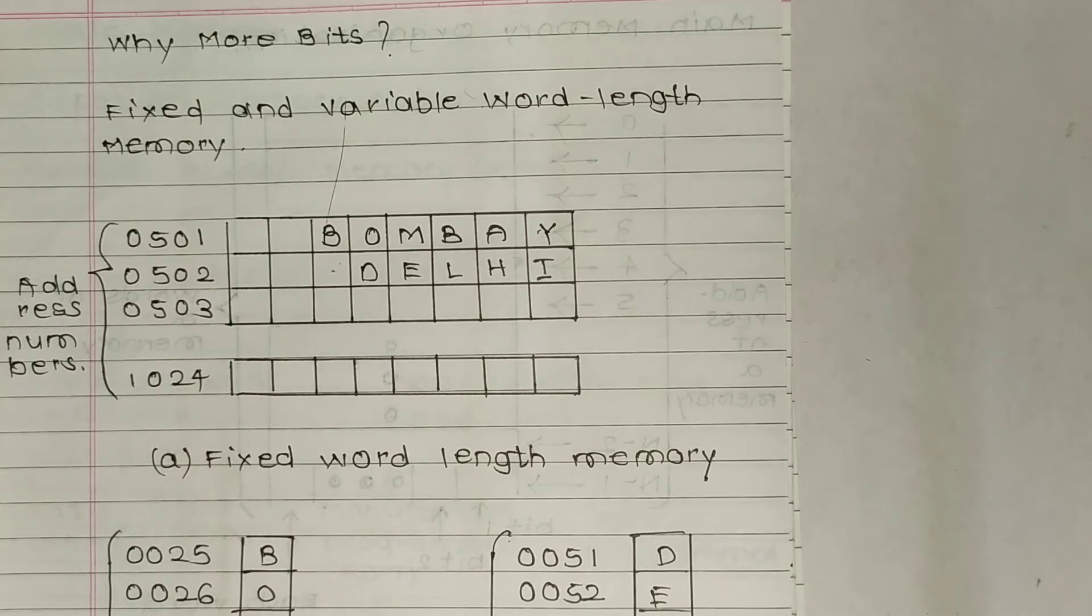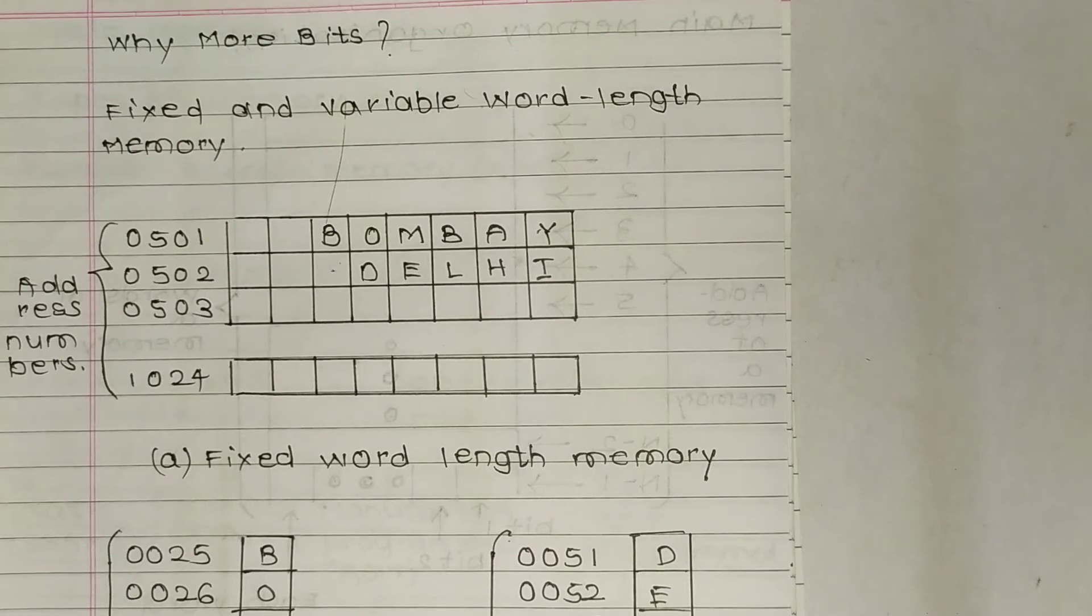This will not happen in case of computers with variable word length because they can place a character in every storage cell. However, word addressable computers possess faster calculating capability because they can add two words in a single operation. If word length of a computer that uses fixed word length approach is eight characters, it can add two eight-digit numbers in a single operation.